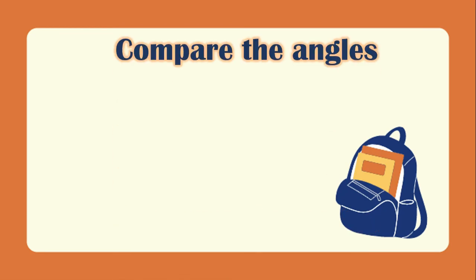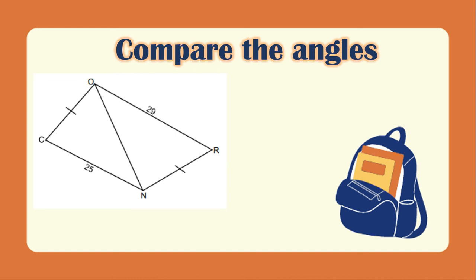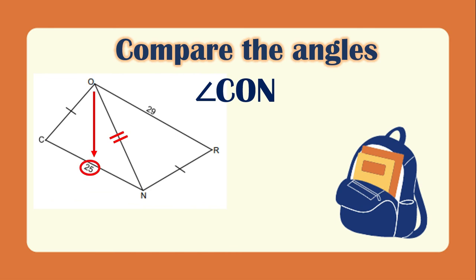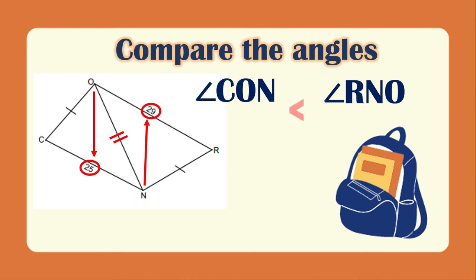We will compare the angles. Looking at these two triangles, we'll identify the third side. ON is congruent to ON by the reflexive property. And then, angle CON is the opposite of side CN, measuring 25. And angle RON is the opposite of side OR, which measures 29. Since 25 is less than 29, angle CON is less than angle RON.